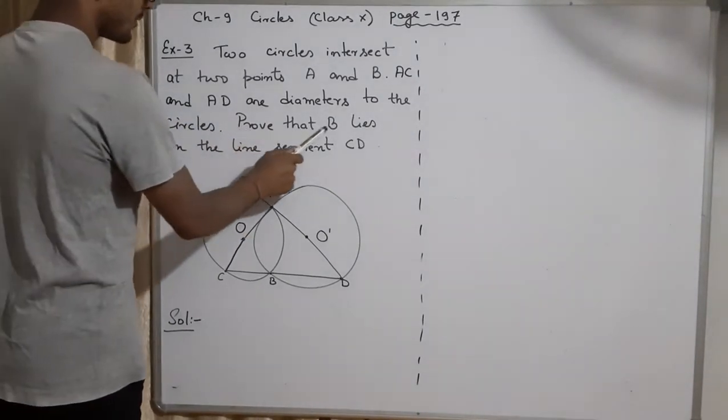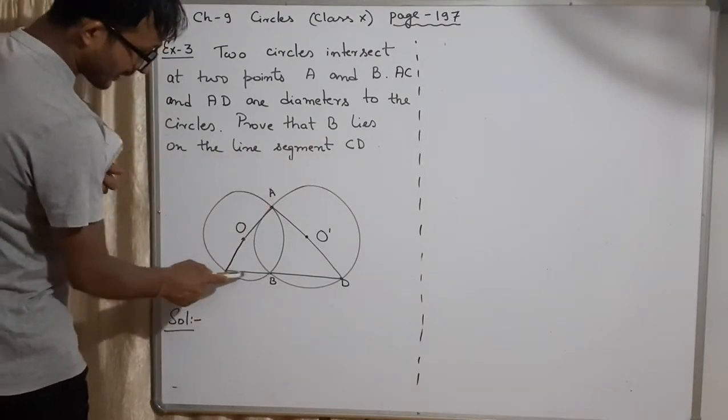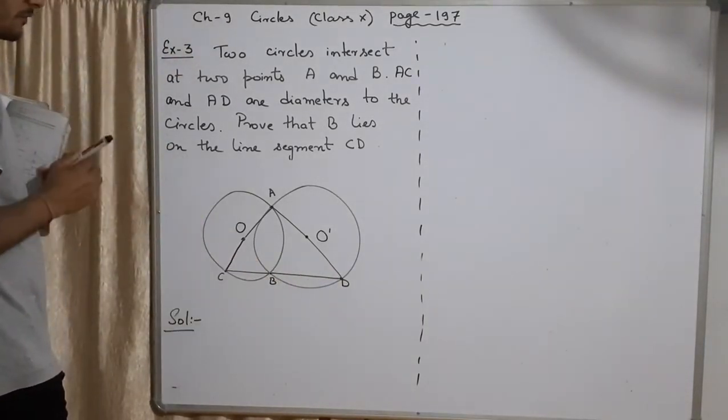Now you have to prove that B lies on the line segment. That means this is a straight line you have to prove.